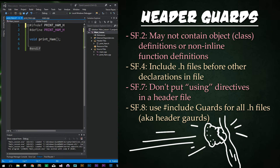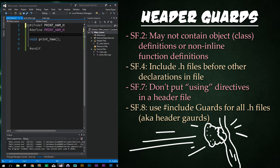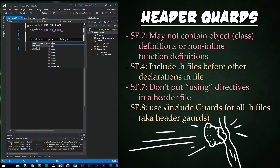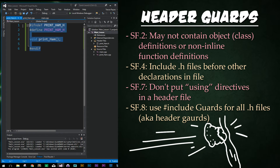The C++ guidelines have this to say. SF.2 says header files may not include object or class definitions or non-inline function definitions — in other words, keep header files to a minimum. SF.4 says include header files before the declaration of a file — always have your includes at the top of your file before anything else happens, which we know from Python with our imports. SF.7 says don't put using directives in a header file — you don't want to go 'using namespace std' or something like that in a header file; it's unnecessary. Instead use your scope like std::whatever. SF.8 says include guards for all header files — the core guidelines say do it, so do it.